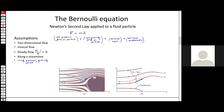For two-dimensional flow, we can describe the acceleration in terms of an on-streamline and a normal-to-the-streamline component. So our total acceleration is the acceleration in the streamline direction plus the acceleration in the normal-to-the-streamline direction.